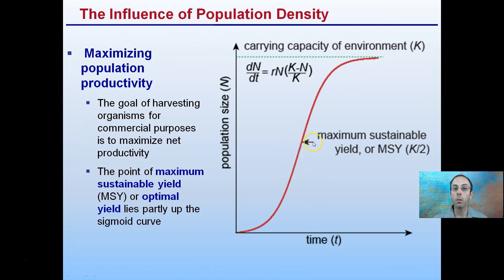It's the maximum sustainable yield of a population — the area where we could harvest individuals, in this case fish as an example, without hurting the total population that naturally exists.